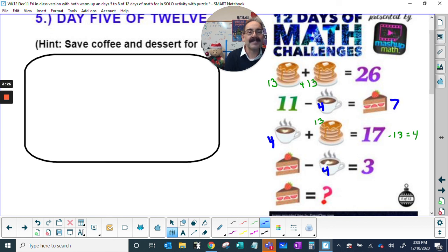Eleven minus four is a piece of cake. So we got a seven. And a seven minus four is three. So seven. Cake equals seven.